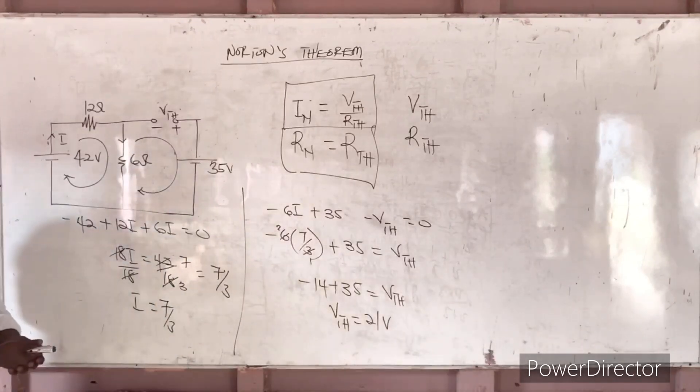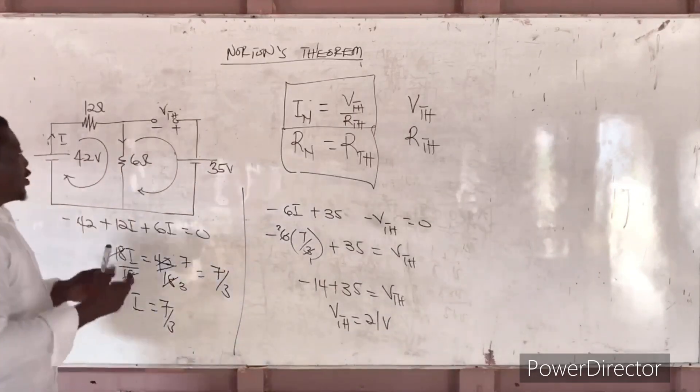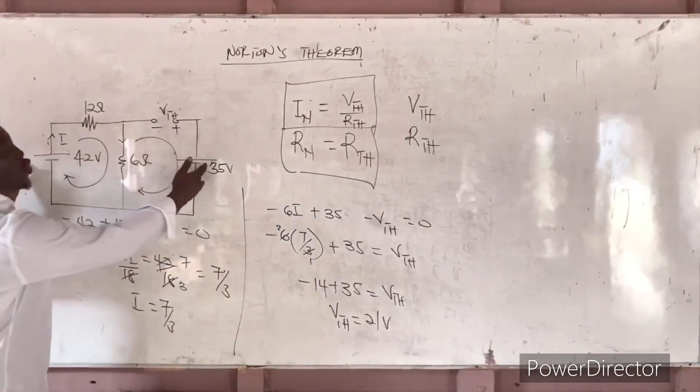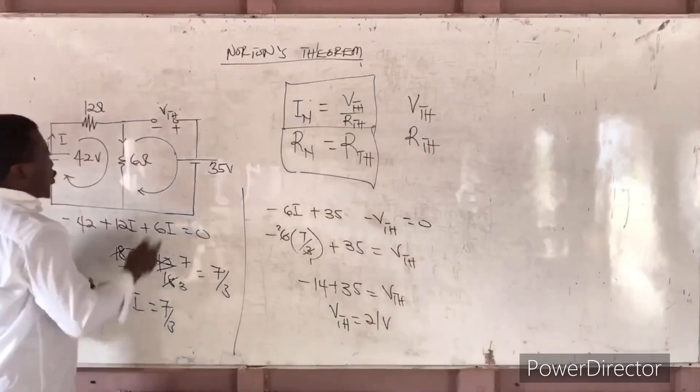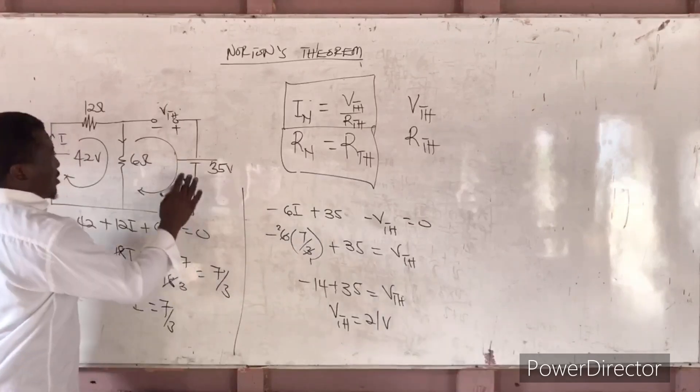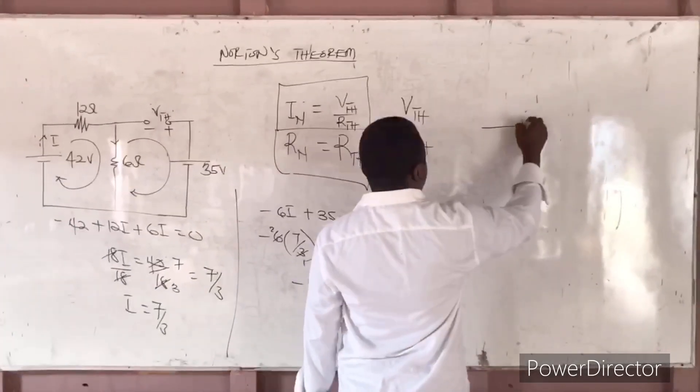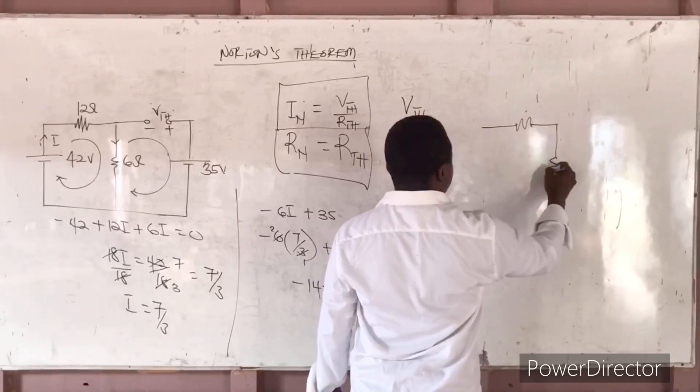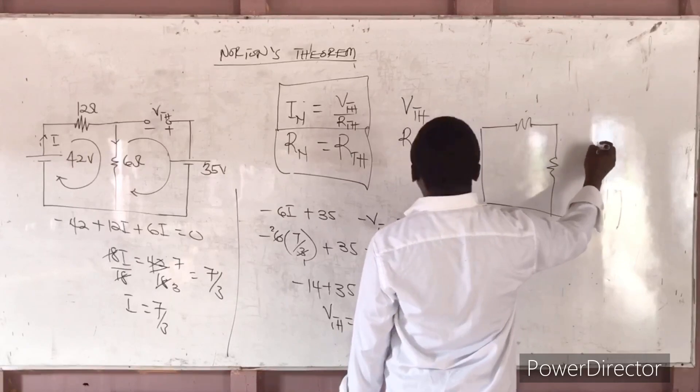So as soon as you get your VTH to be 21V, now the only thing we are left to find is the RTH. And when you were watching Thevenin, we said the RTH, how do you find that? If you want to find RTH, you short all voltage sources. So you short the voltage source. Now that we have that, so you can redraw. Now you short the voltage sources.